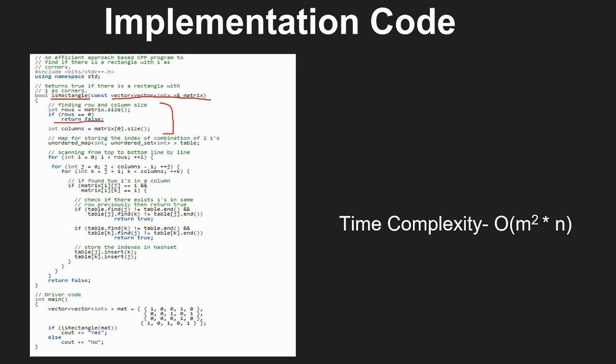For the rows, the size of the matrix is the number. For the columns, the length of a row is the number of columns. Now we make a map mapping from an integer value to a set with integer type values.